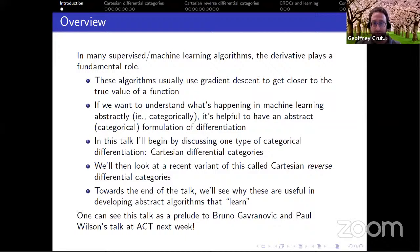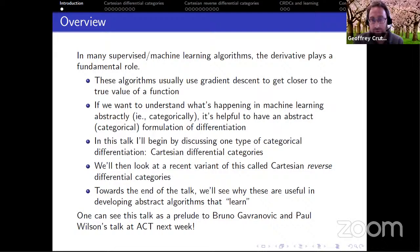Part of the overall program is to understand what's happening in supervised or machine learning a little more abstractly — that is, categorically. We want to understand the categorical ideas or structures that underlie supervised learning algorithms, and in particular the role of the derivative and gradient descent. A lot of supervised machine learning algorithms use gradient descent to get closer to the true value of a function.